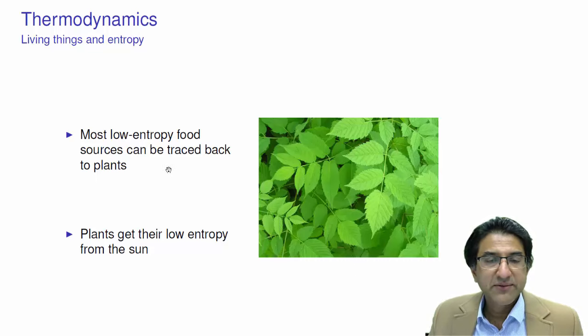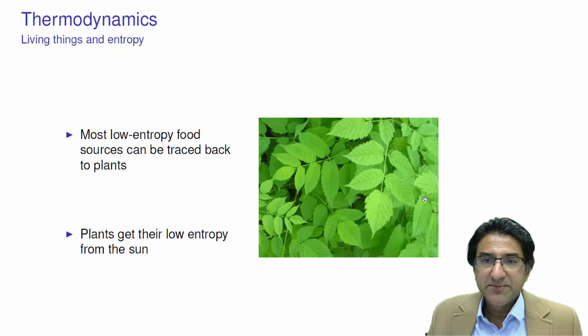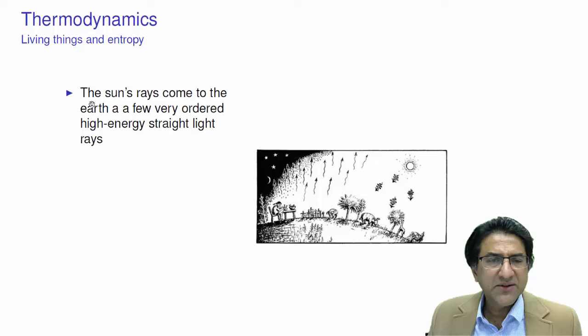Now, most low entropy food sources can be traced back to plants. They're at the bottom of the food chain. So let's trace where this low entropy comes from. Plants get their low entropy from the sun, mostly. They take disordered gases, carbon dioxide, and sun and water, and they convert these disordered materials into these beautiful structures. So they're actually getting very ordered energy from the sun.